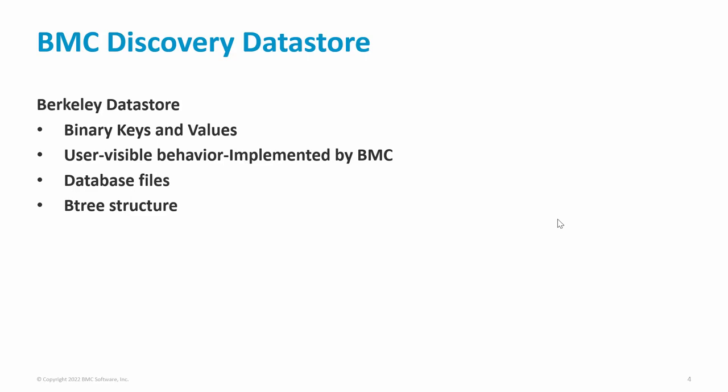This data store stores simple pairs of binary keys and values. All the user-visible behavior of the discovery data store, such as nodes, relationships, search languages, and so on, are implemented by BMC. Berkeley DB manages a collection of data store files which will be in the discovery data store file system. These files contain data entries in a B-tree data structure.